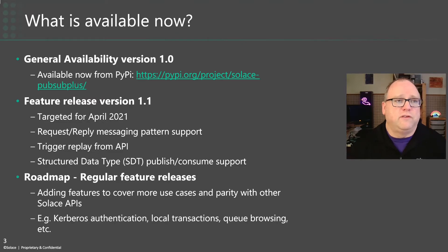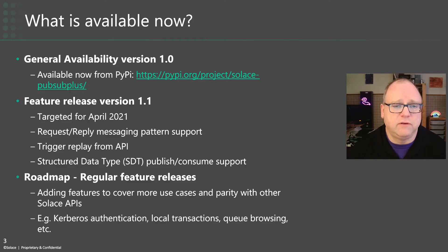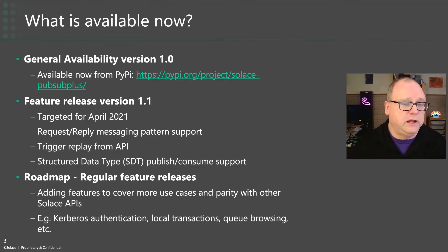So what is available right now? The general availability of the 1.0 version is available from PyPI, or you can get it directly from Solace on the download page, or even if you're a customer on the customer product portal. It has a set of functionality that is not yet complete in terms of where we're going with it.